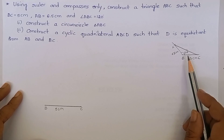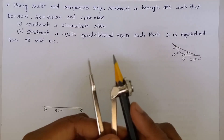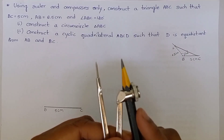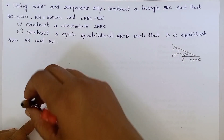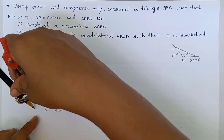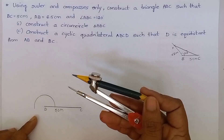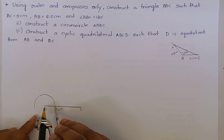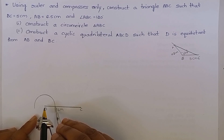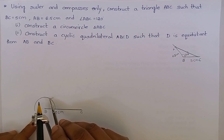Angle B is 120 degrees. To construct 120 degrees, take the compass of any measurement of your choice. Keep the compass at point B and draw an arc. Without changing the measurement of the compass, keep the compass at this point and cut an arc. It measures 60 degrees.